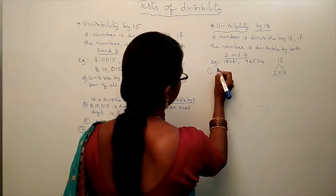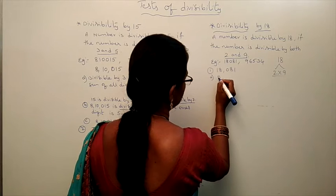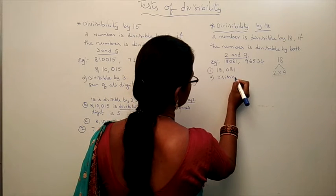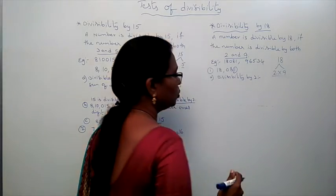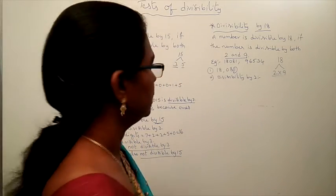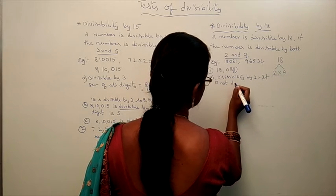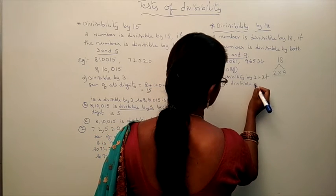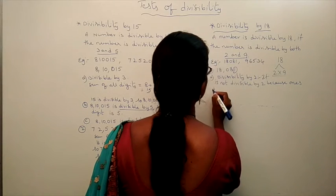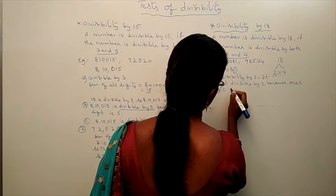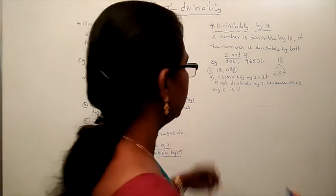Example 1: 18,081. First we have to check divisibility by 2. What is the rule? The last digit must be 0, 2, 4, 6, or 8. The ones digit here is 1. So it is not divisible by 2 because the ones digit is 1. Since 2 does not divide it, it is not divisible by 18.